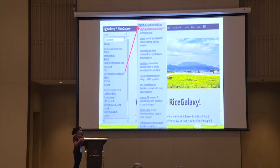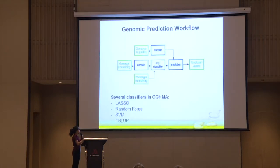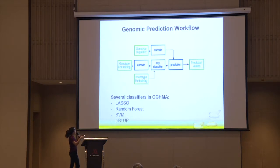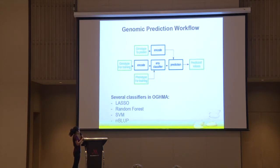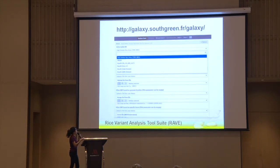We also have the genomic prediction — we call it the OMAS tool suite. The OMAS tool suite is a set of tools we developed to decipher genotypes and understand how they affect phenotypes of rice using machine learning. In a typical genomic prediction workflow, you have your genotypes — either from the 3K or from HYDRA — and then you have your genotypes for training and your phenotypes. You can choose from classifiers in OMAS such as Lasso, Random Forest, or SVM, and then you do the predictions to get your predicted values. This is how the genomic prediction workflow looks like in Rice Galaxy.